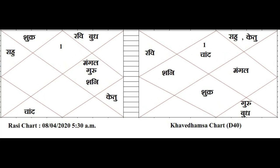Here, Sun is placed in Pisces in the Rasi chart and Gemini in the Khavedamsa chart, so they are placed Kendra to each other — that is stronger. Taking the example of Saturn: Saturn is placed in Capricorn in Rasi and Cancer in Khavedamsa, so both of them are in Kendra — it is stronger.